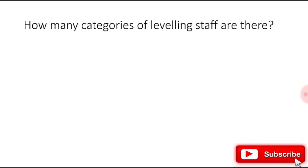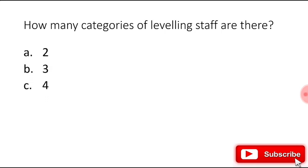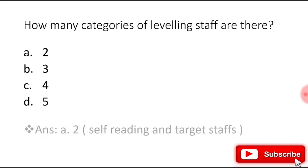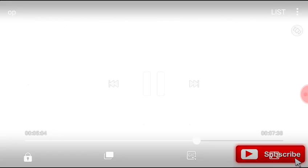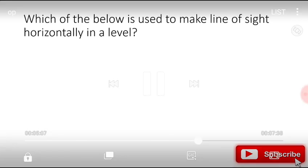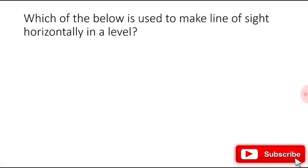How many categories of leveling staff are there: two, three, four, or five? The right answer is two — self-reading staffs and target staffs.